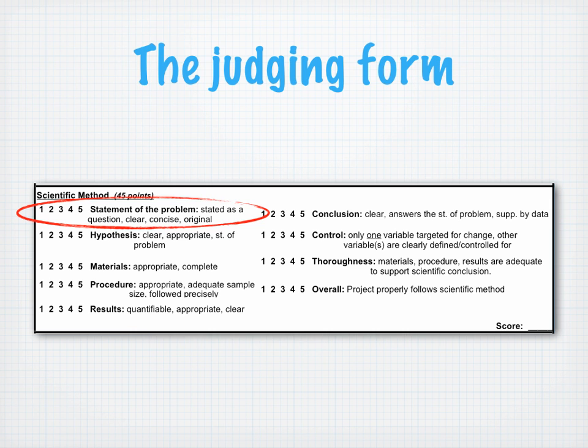First, a great example of an experiment that follows the scientific method would start with a statement of the problem such as: how does the amount of fertilizer used affect plant growth? The test variable will be the amount of fertilizer used, so all other variables and conditions should be controlled for. The control group itself would be a plant with no fertilizer.